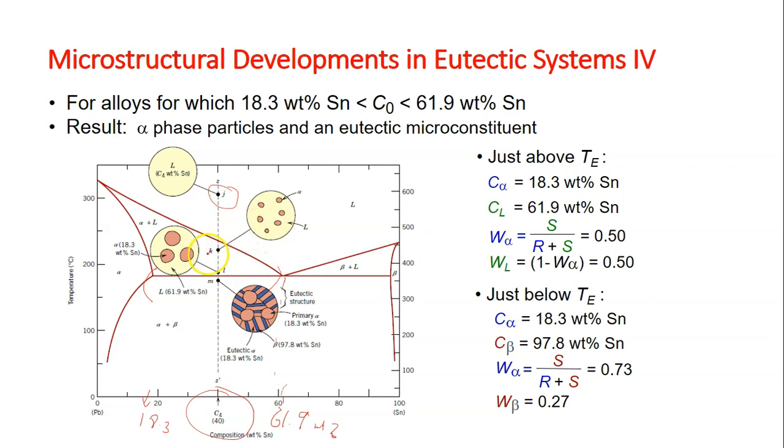The gray or peach color stands for the liquid, and these tiny dots or circles are the alpha phase or solid. Upon further cooling, you can see that the alpha solid is getting bigger and bigger.